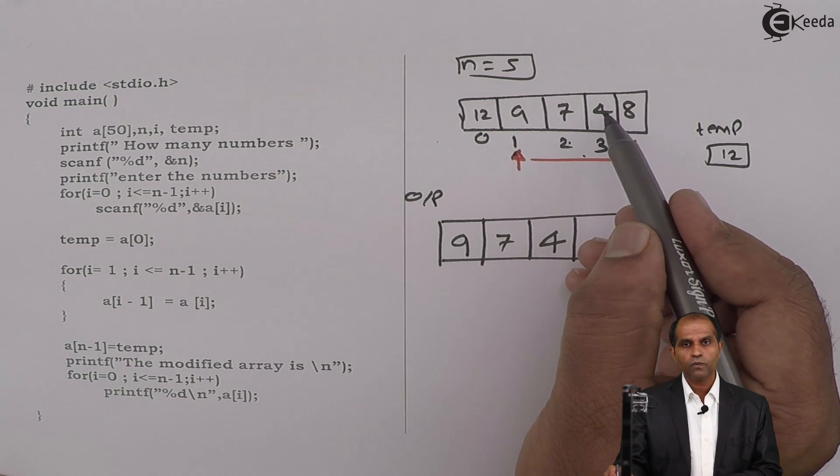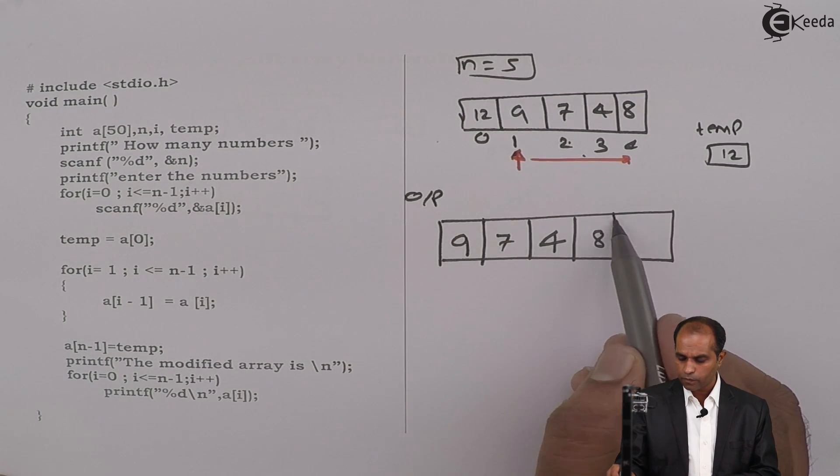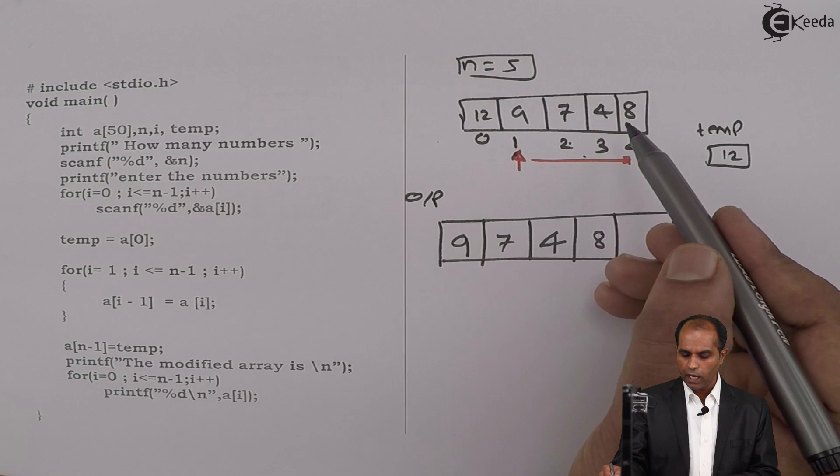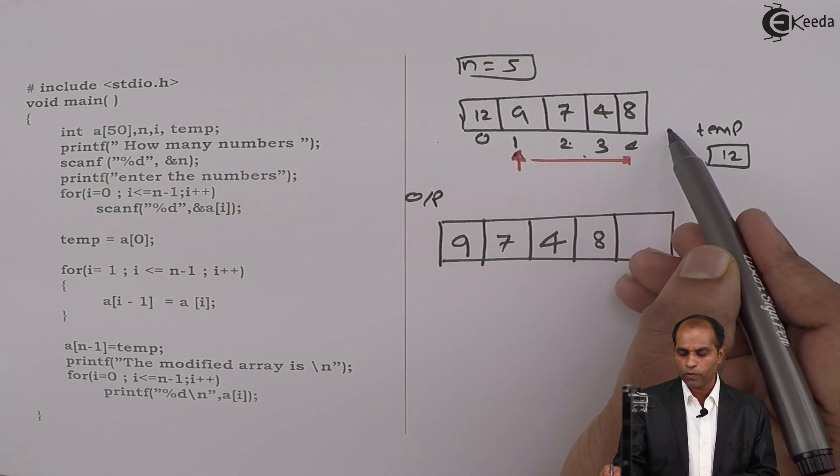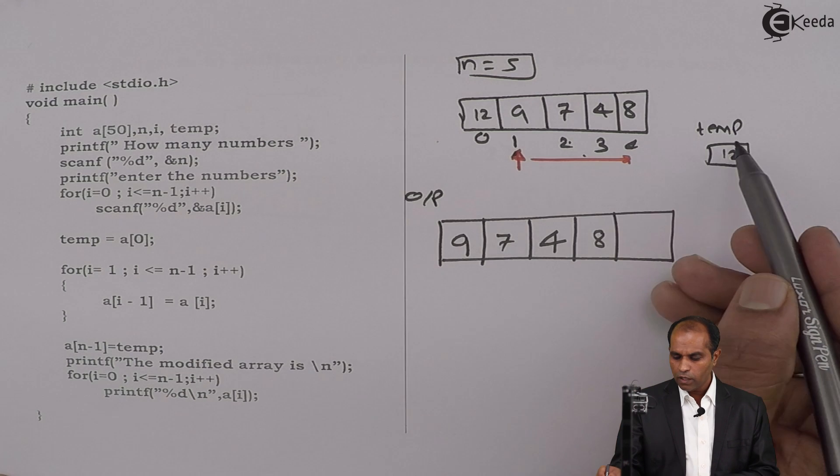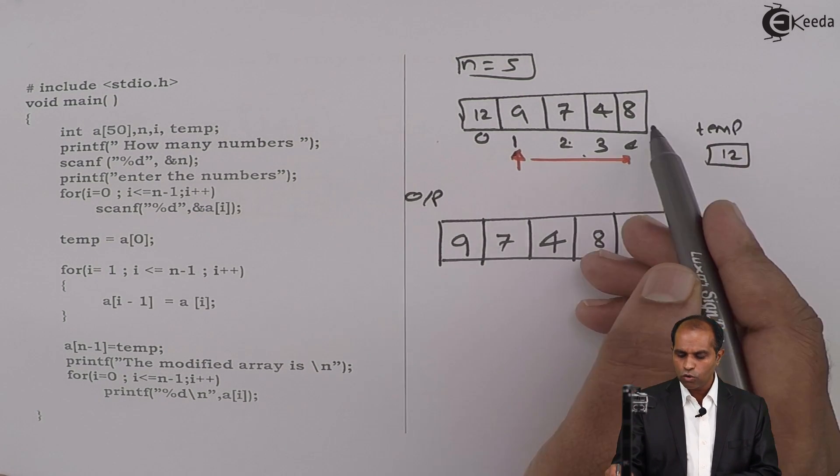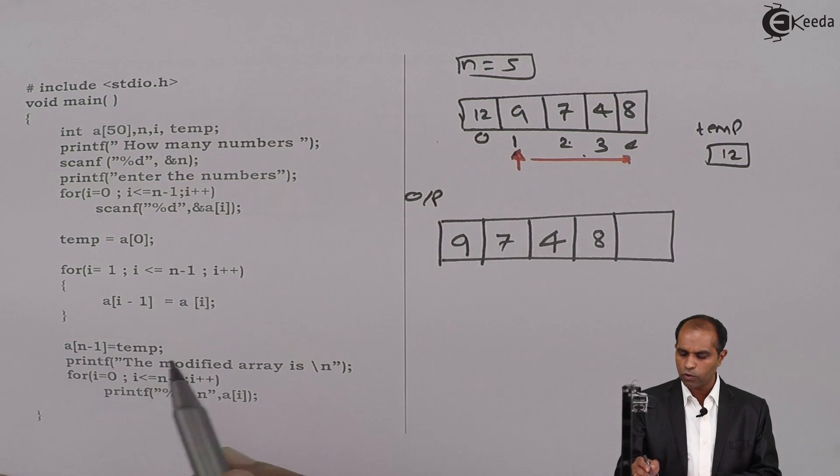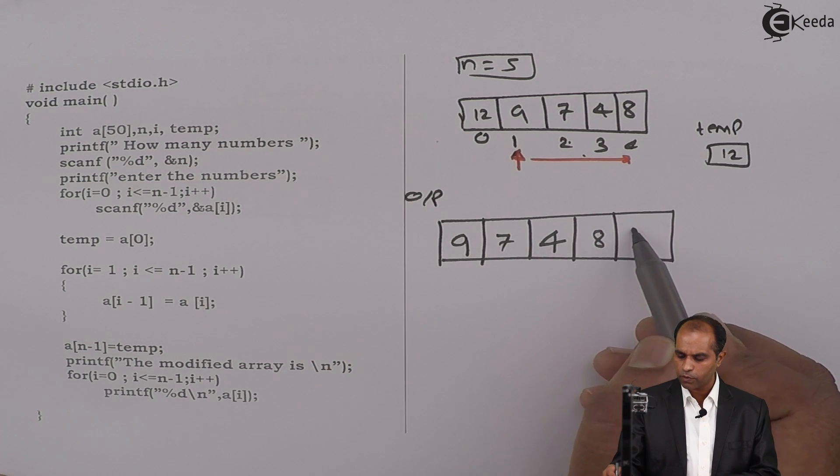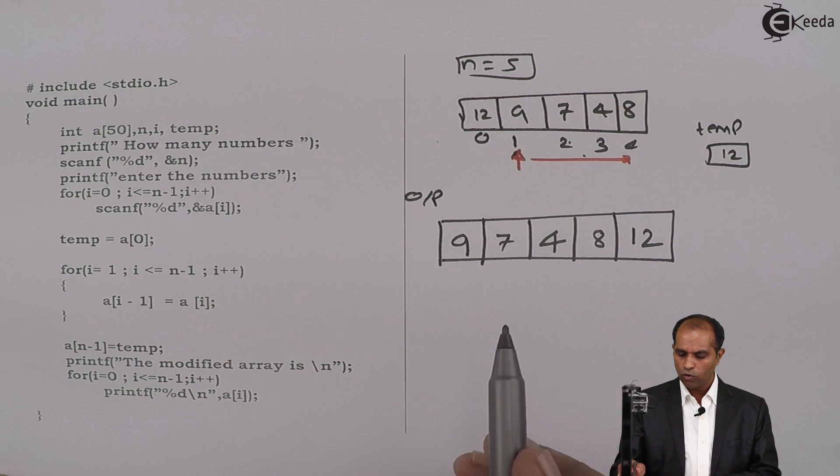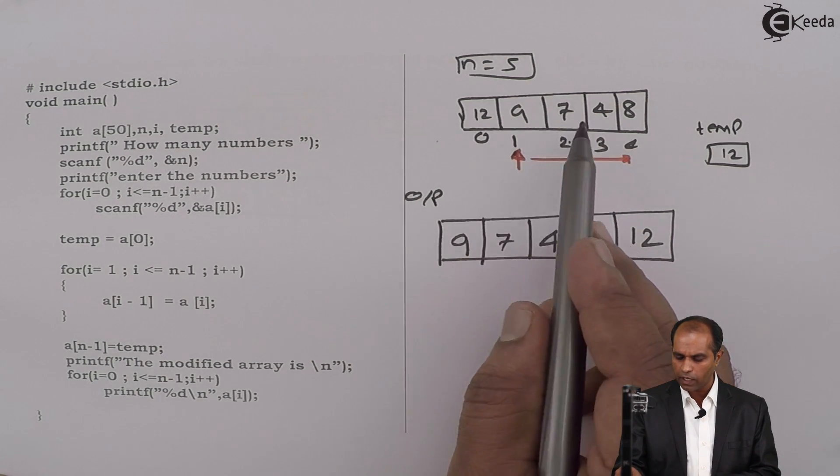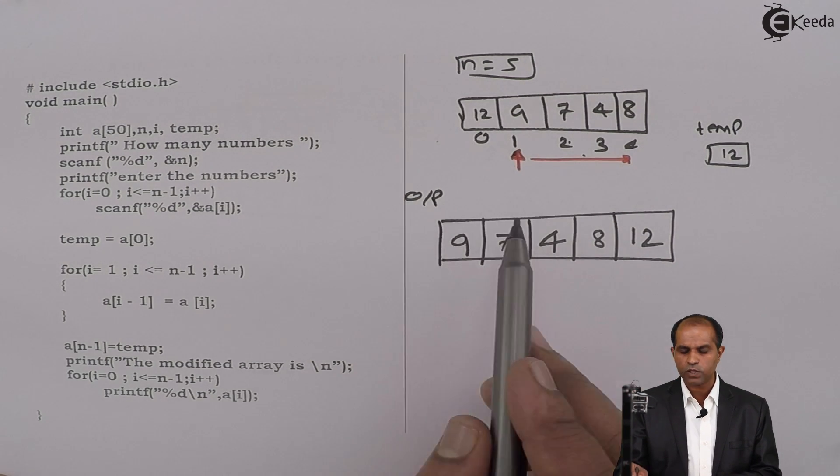a[4] goes to a[3]. This is 8. When you go back, i plus plus will increase the value of i to 5, which means that it is quit. When I quit, whatever the value which is in temp, since it has been taken out from a[0], should go to the other end, that is a[n-1]. So temp goes to a[1], a[n-1], that is 12.